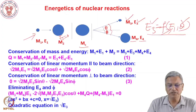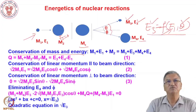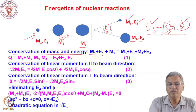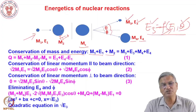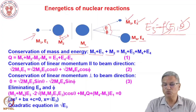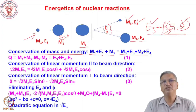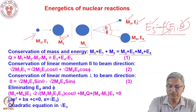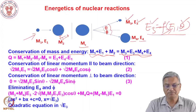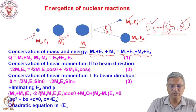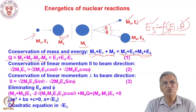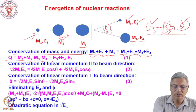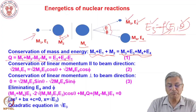Let us set up the equation for conservation of mass and energy. M1 plus E1 is the mass and energy of the projectile, plus M2 — the target is stationary so E2 equals zero. So: M1 + E1 + M2 = M3 + E3 + M4 + E4. This is conservation of mass and energy before and after the reaction. Rearranging in terms of the Q value: Q equals M1 + M2 minus M3 + M4, that is mass of reactants minus mass of products, or equivalently kinetic energy of products minus kinetic energy of reactants.